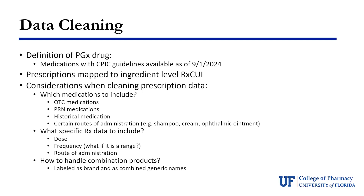The next step was data cleaning. First, how do we define a PGx drug? We considered any medication with CPIC guidelines as of last September a PGx drug. We then mapped prescriptions to ingredient-level RXNorm codes. This was important because these are unique identifiers for drugs that could be listed by brand name or as combination products, and we wanted to identify and group the actual drug ingredients being taken.